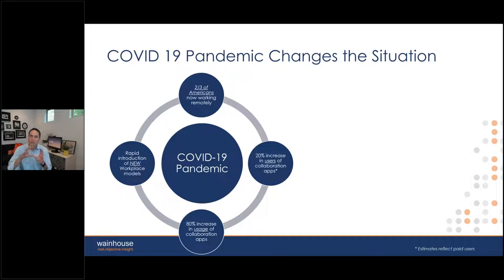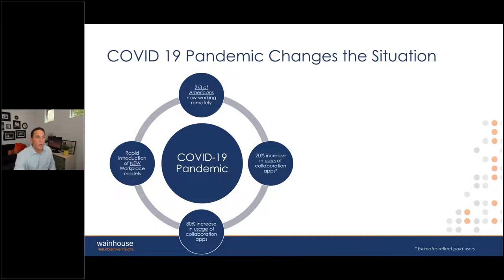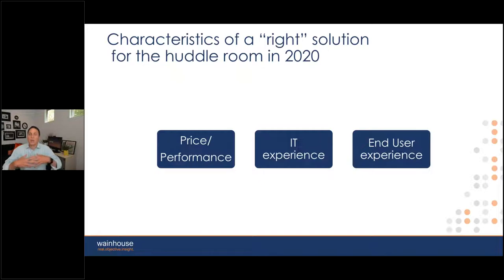This is also driving new workplace models. Where there was slow adoption of open office or activity-based spaces, the pandemic has introduced new workplace models. All of this plays into what is the right solution for a small room. The big statement is that shared spaces are going to need to evolve — they need to take the things that we love about them, but allow us to feel safe when we return back to work. Here are the characteristics of the right solution, which I found in the MM30: price performance, the IT experience, and the end user experience.